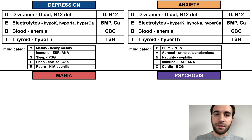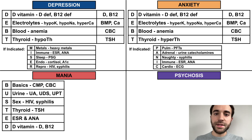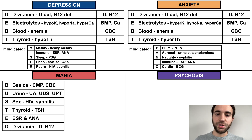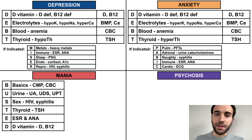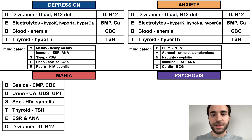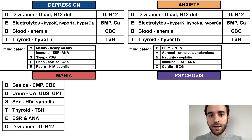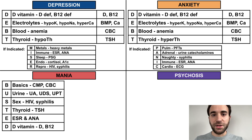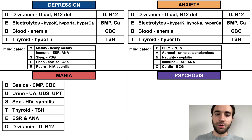Let's now move on to mania, where things get a bit more complicated. Since mania is such a severe condition and since patients with mania are often poor historians, you'll want to cast a wider net for potential medical causes. A thorough initial screen can be remembered with the mnemonic BUSTED: Basics includes a CMP and CBC; Urine refers to a urinalysis, urine drug screen, and urine pregnancy test when applicable; Sex refers to HIV and syphilis; Thyroid refers to TSH; ESR refers to ESR and ANA; and D-vitamin refers to vitamins D and B12. These studies will screen for a bevy of medical causes of mania, including psychoactive drugs, hyperthyroidism, autoimmune conditions, and so on.